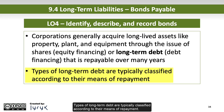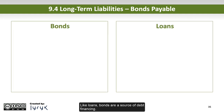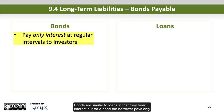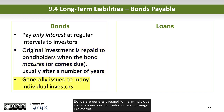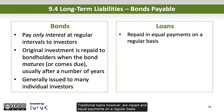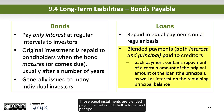Types of long-term debt are typically classified according to their means of repayment. Like loans, bonds are a source of debt financing. Bonds are similar to loans in that they bear interest, but for a bond the borrower pays only interest at regular intervals to the bondholders, or investors. The original investment is repaid to bondholders when the bond matures, or comes due, usually after a number of years. Bonds are generally issued to many individual investors and can be traded on an exchange like stocks. Traditional loans, however, are repaid in equal payments on a regular basis — those equal installments are blended payments that include both interest and principal.